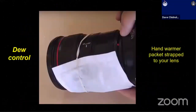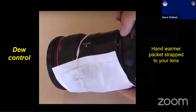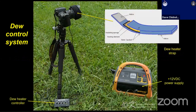The other piece of equipment that's just as important in our environment is something for dew control. Especially in the spring and the autumn, our air tends to get very damp and it'll fog over your lens pretty quickly. A simple hand warmer packet strapped to your lens with an elastic band can do the job — it provides a small amount of heat enough to keep the dew at bay. For those who do a lot of this type of imaging, there are dew control systems: a heated strap powered by a 12-volt power supply that provides a gentle amount of heat to your lens body to keep dew from forming.